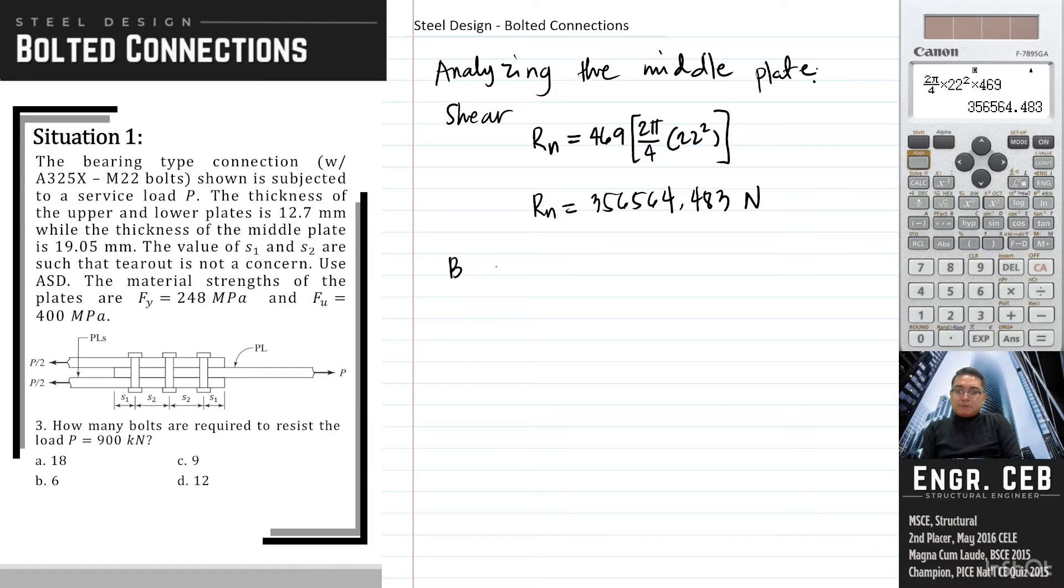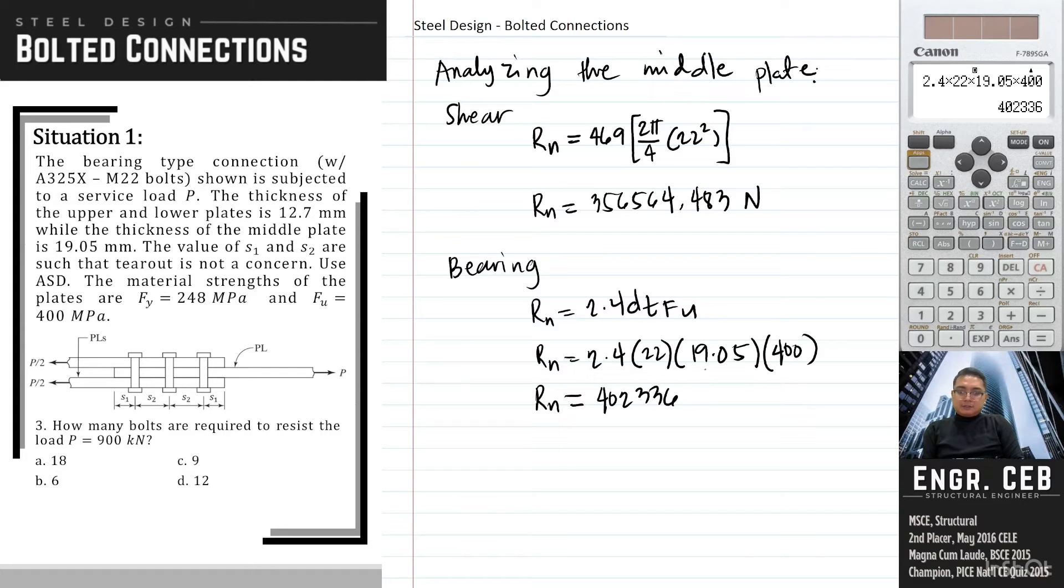And then for bearing, we have R sub N equals 2.4 dt fu. So we have 2.4, 22, the thickness of the middle plate is 19.05. Therefore, R sub N equals 402,336 newton. So comparing the capacities, the governing limit state is the bolt shear. So we will now use this as the capacity of the bolt.